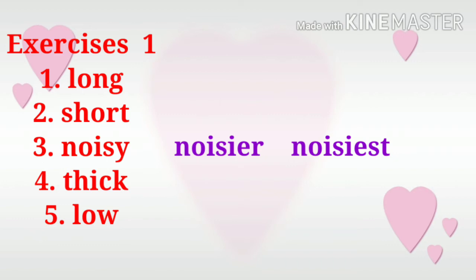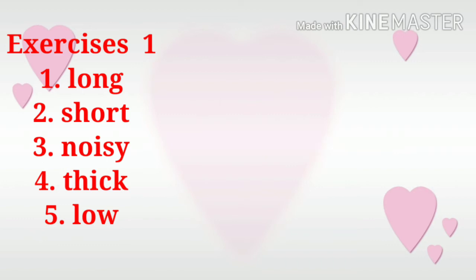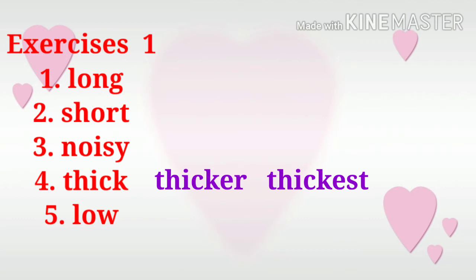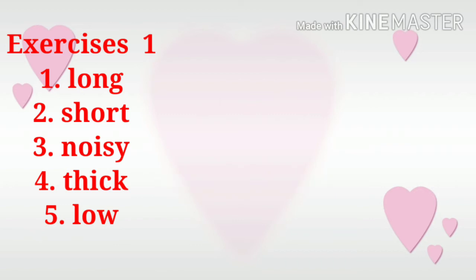Let us now move to number four. The word is thick. In the comparative degree it becomes thicker, and then in the superlative degree it becomes thickest. Number five: low. The comparative degree of low is lower — we add ER at the end of the word — and then lowest. We add EST at the end of the word low, so it becomes lowest.